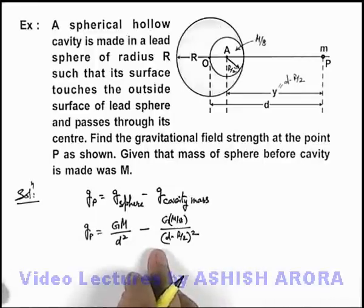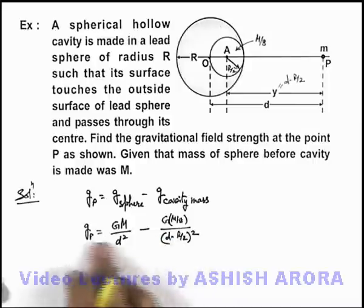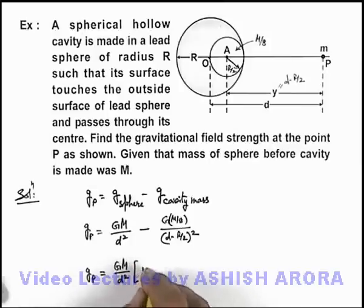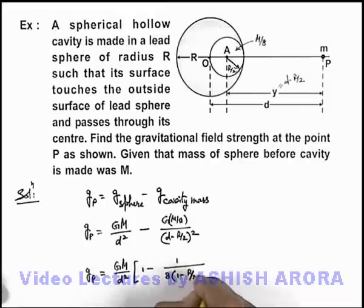If we simplify this expression, d can be taken out and the gravitational field at point P can be written as GM by d squared times 1 minus 1 by 8 times 1 minus R by 2d whole squared.